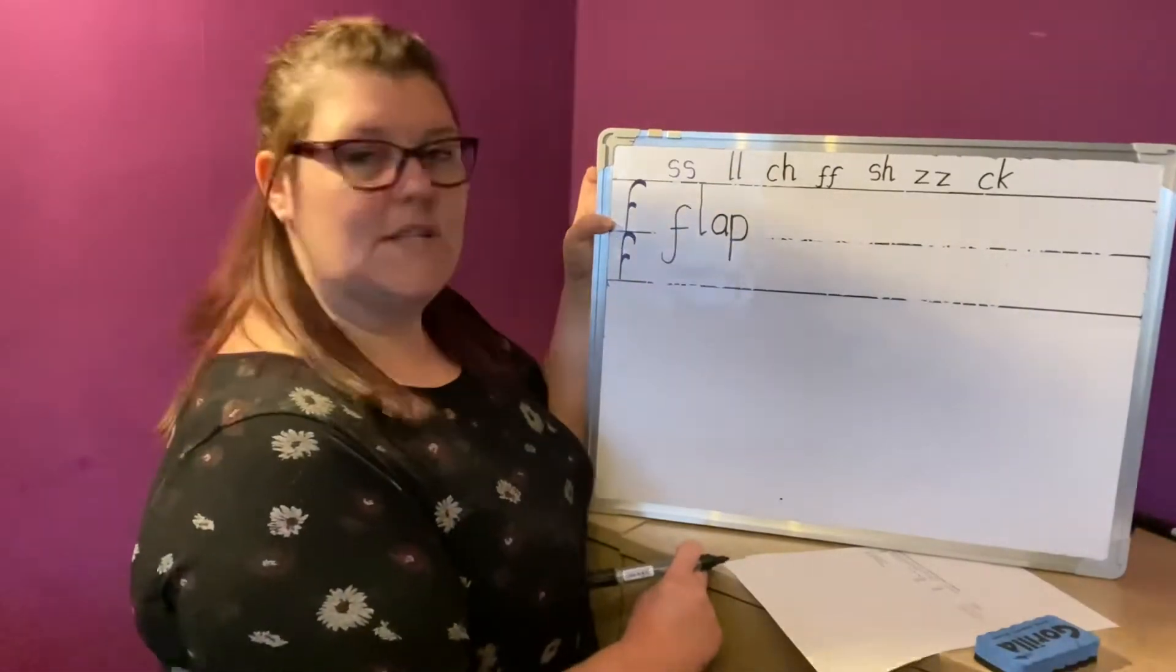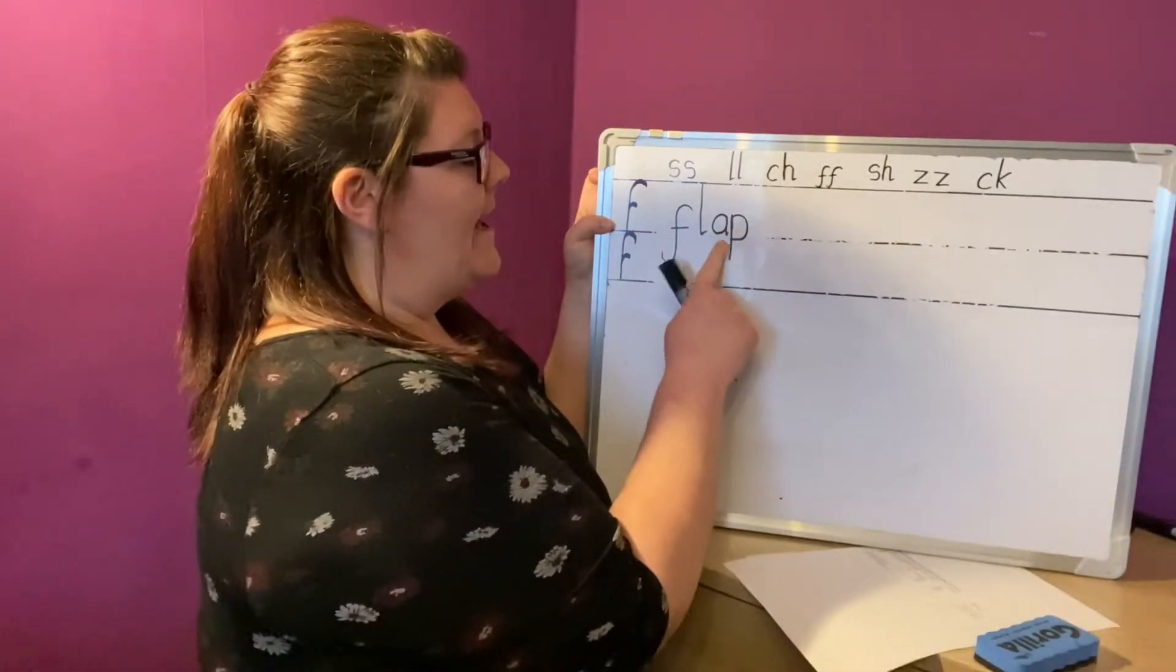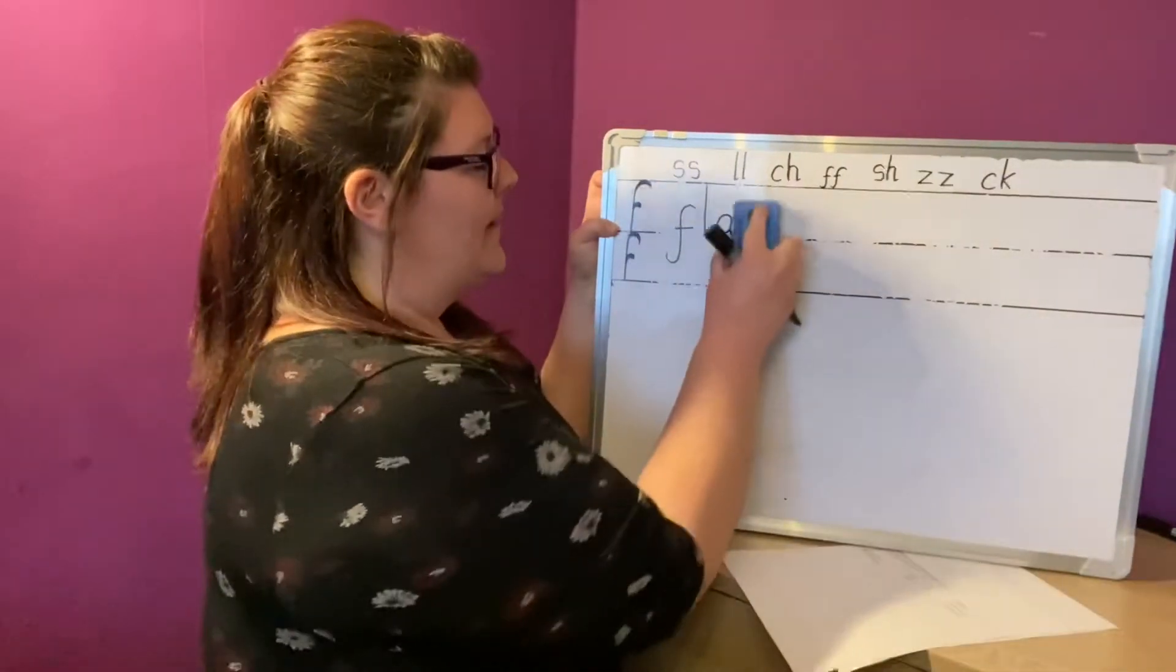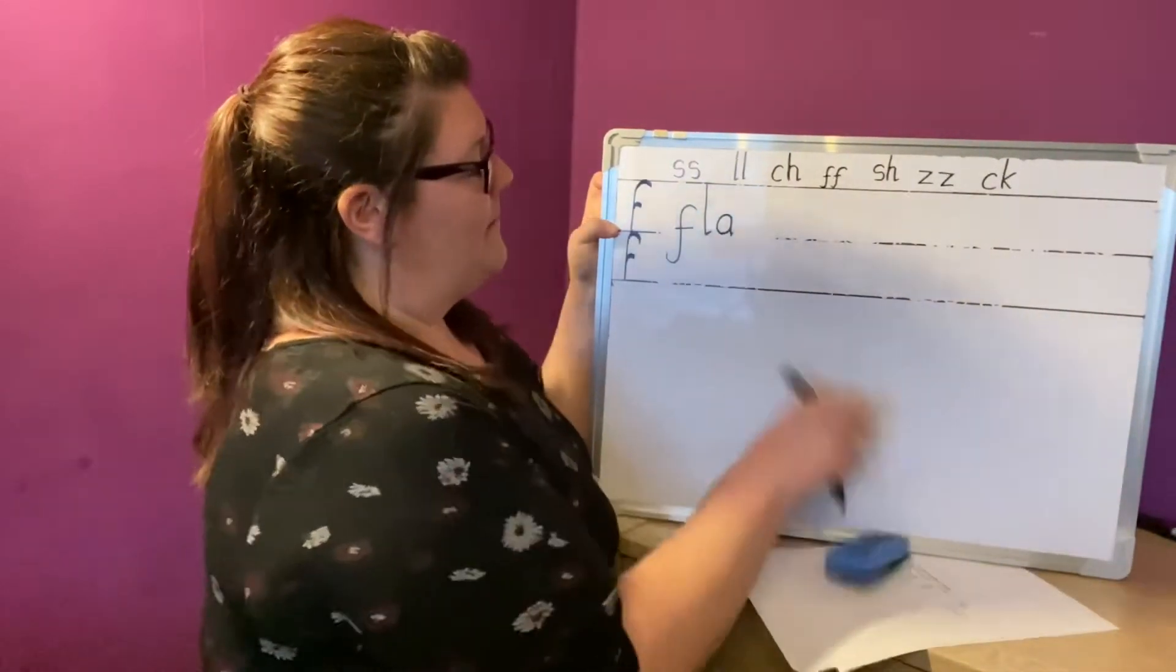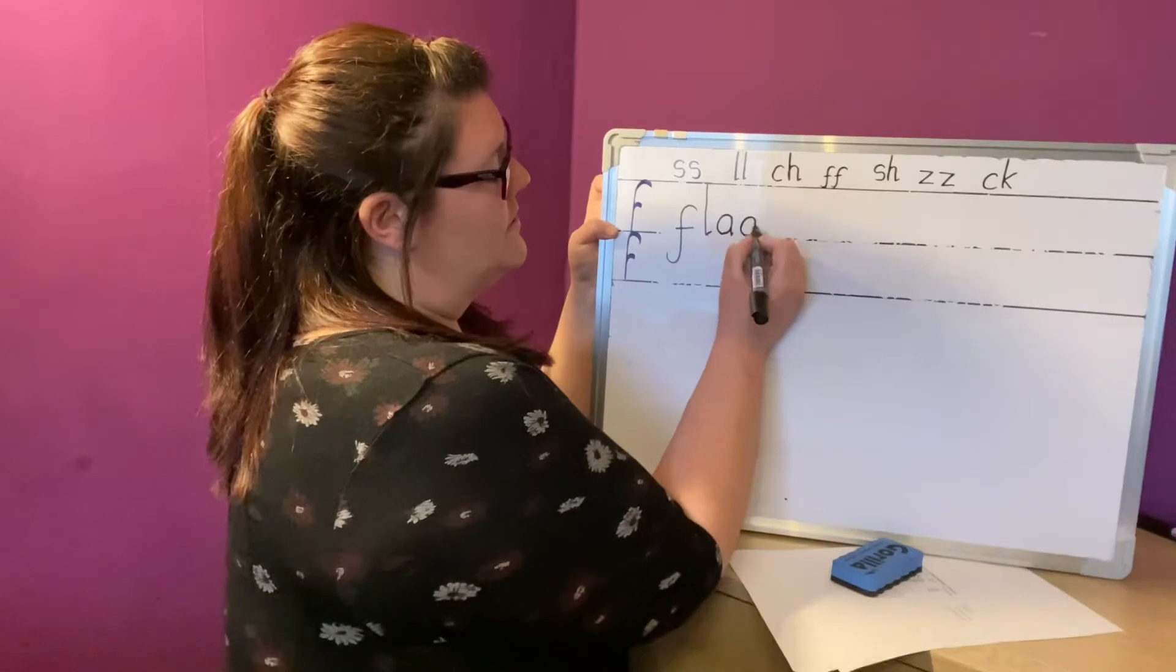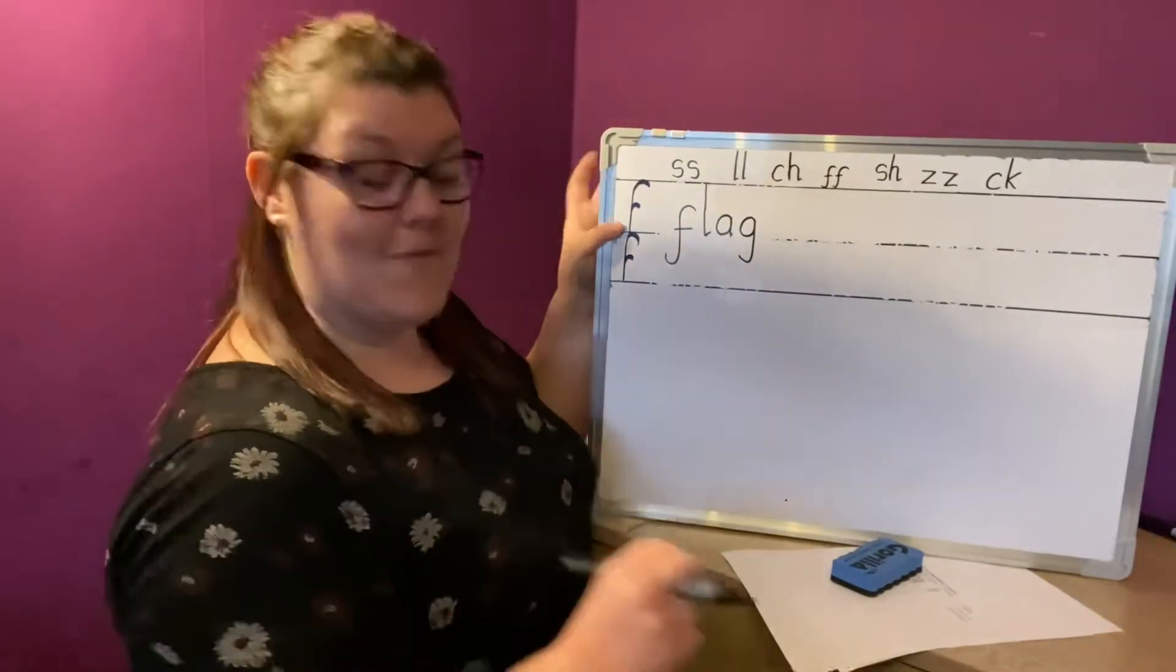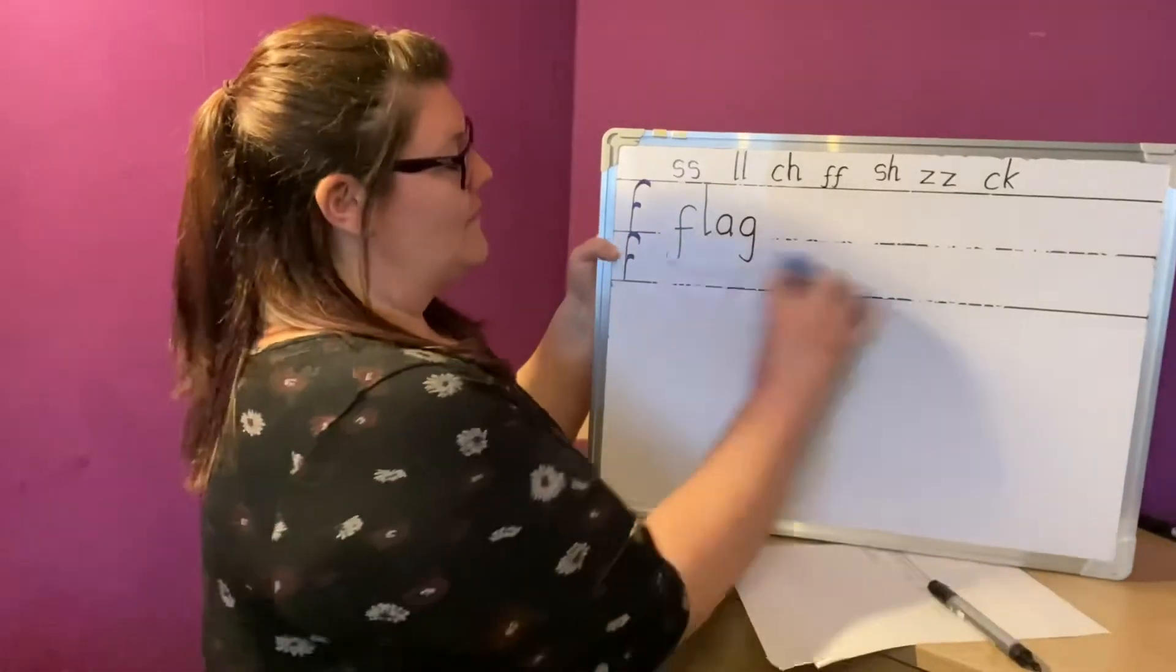What do we need to change? Flap. Yeah, perfect. We're going to change the P and we're going to put a G there instead. Flag. Well done. And now you can rub your boards because that's sound swap finished.